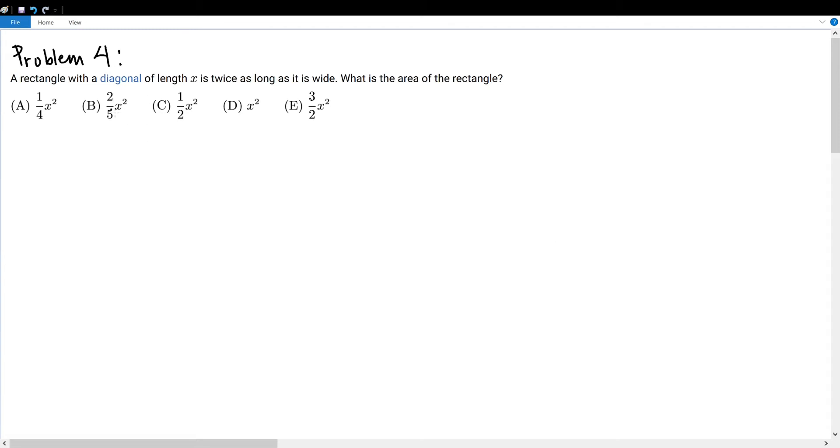AMC 10A problem 4. A rectangle with a diagonal of length x is twice as long as it is wide. What is the area of the rectangle?